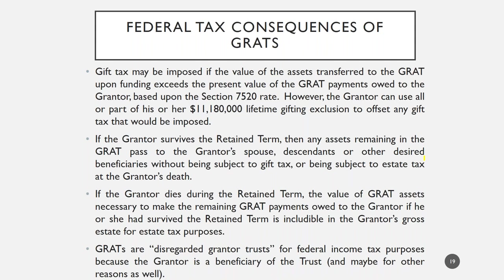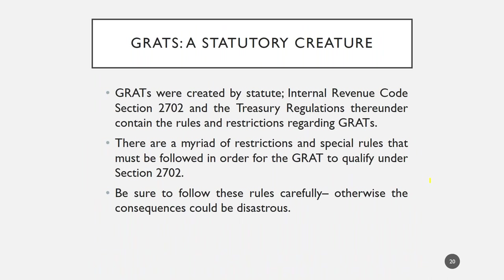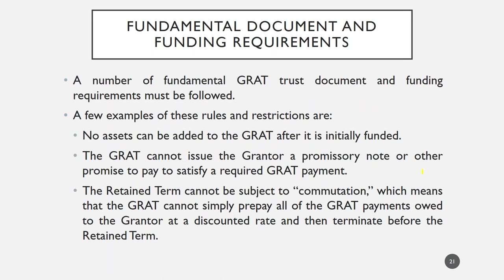The GRAT can be structured so the remainder trust holds assets for the benefit of the grantor's spouse and/or descendants. During the retained term, payments can only be made to the grantor — no other beneficiaries can receive anything. If the grantor dies during the retained term, the value of the remaining required payments is included in the estate, though the rest of the assets still pass without taxation. GRATs are disregarded grantor trusts during the retained term, so payments and transactions are ignored for income tax purposes. Because they are statutory, there are several rules to follow, and failing to follow them could cause your client a much larger taxable event than intended.